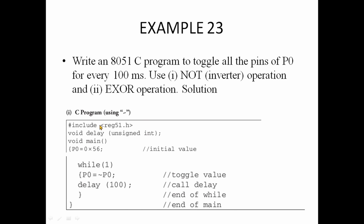We will also include the delay programming. In the library file, we will not include the global declaration. We will not include the subroutine programs separately — we will use the delay program. Unsigned integer is used. This is the subroutine program. We will start the program while P0 is equal to NOT P0.